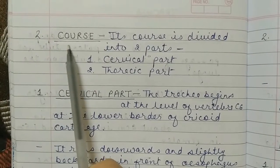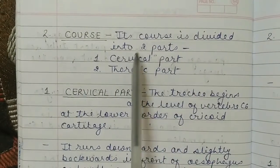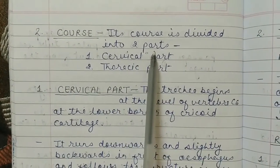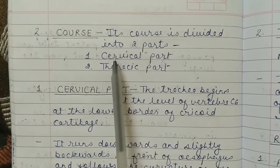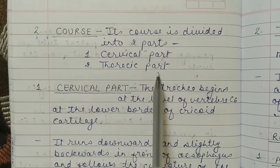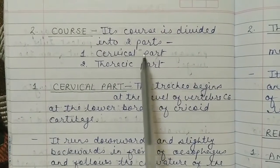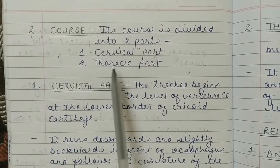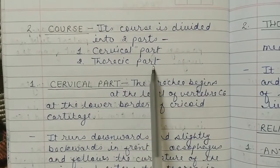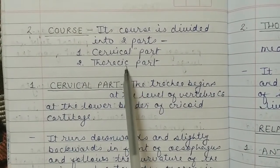Second point is the course of trachea. Its course is divided into 2 parts: first is the cervical part — the portion present in the neck — and second is the thoracic part — the portion present in the thorax.